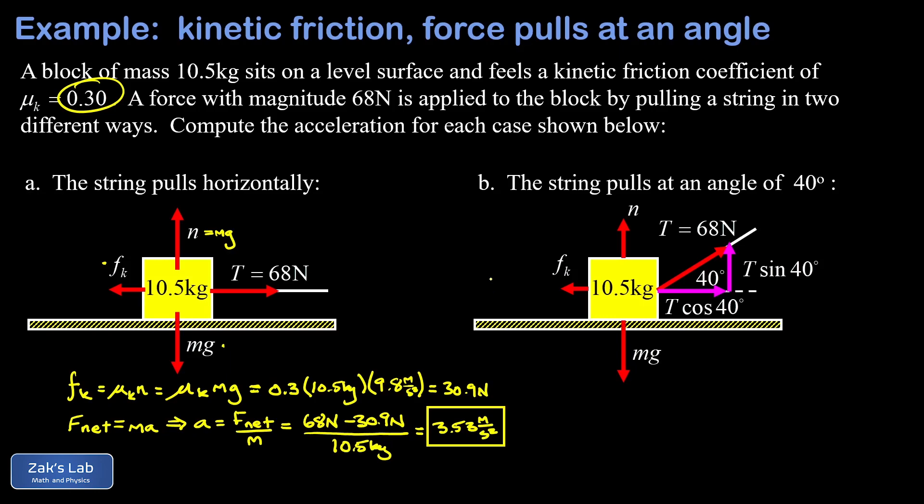There's our components of the force exerted by the rope, the tension of 68 newtons. That breaks down into T cosine 40 degrees for the horizontal component and T sine 40 degrees for the vertical component.